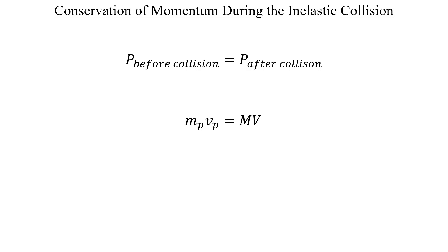Here I'm calling the total mass of the frame and the putty capital M. The velocity of that composite object is capital V, which we'll solve for by dividing both sides by capital M. If we plug in that previous definition for the impact velocity of the putty, which contains a negative sign, now the velocity of our composite object is consistent with our coordinate system.